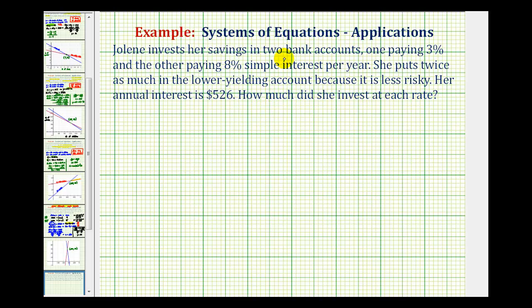It is possible to solve this problem using one equation, but we're going to solve it using a system of equations and then solve the system. There are two unknowns here. We don't know how much money is invested at 3% or how much is invested at 8%. So let's let x equal the amount of money invested at 3% and we'll let y equal the amount of money invested at 8%.